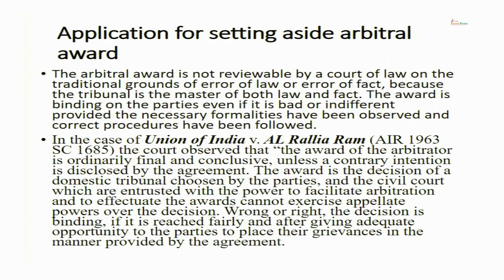There are some preliminary observations about Section 34. This is not a provision of review or appeal in the way we understand. The arbitral tribunal is not going to be reviewed by the court on traditional grounds of judicial review — that is, error of law or error of fact. There are fixed grounds given in Section 34 on which the arbitral award is going to be reviewed. If the necessary formalities have been followed by the arbitral tribunal and correct procedure has been followed, then the award is binding and cannot be set aside on traditional grounds of error of law, illegality, irrationality, or procedural impropriety.